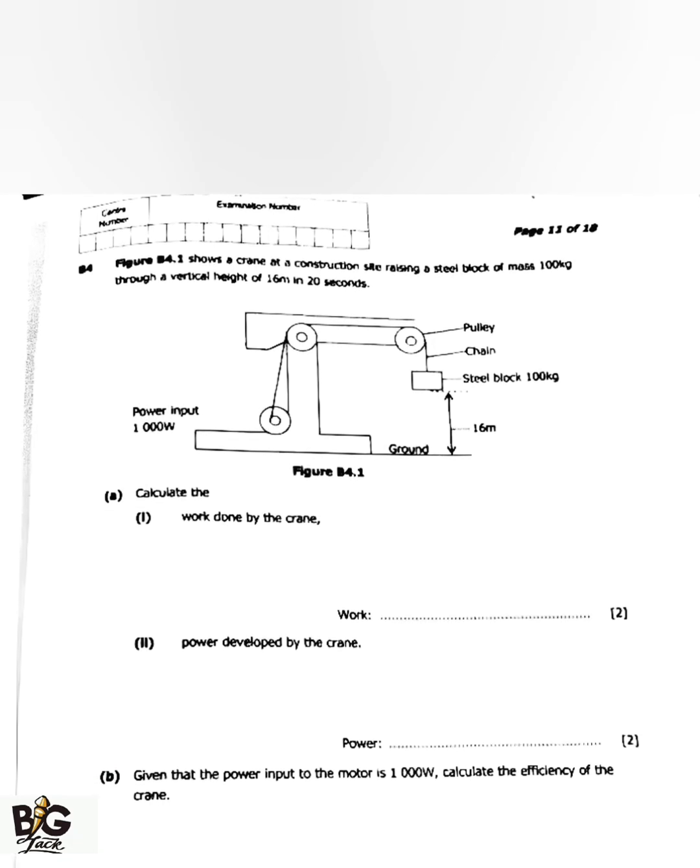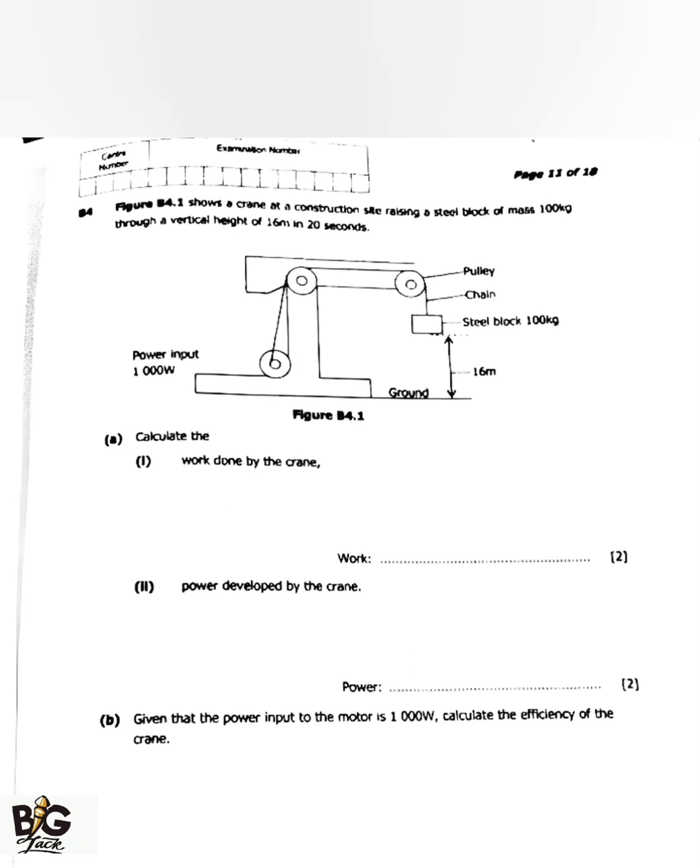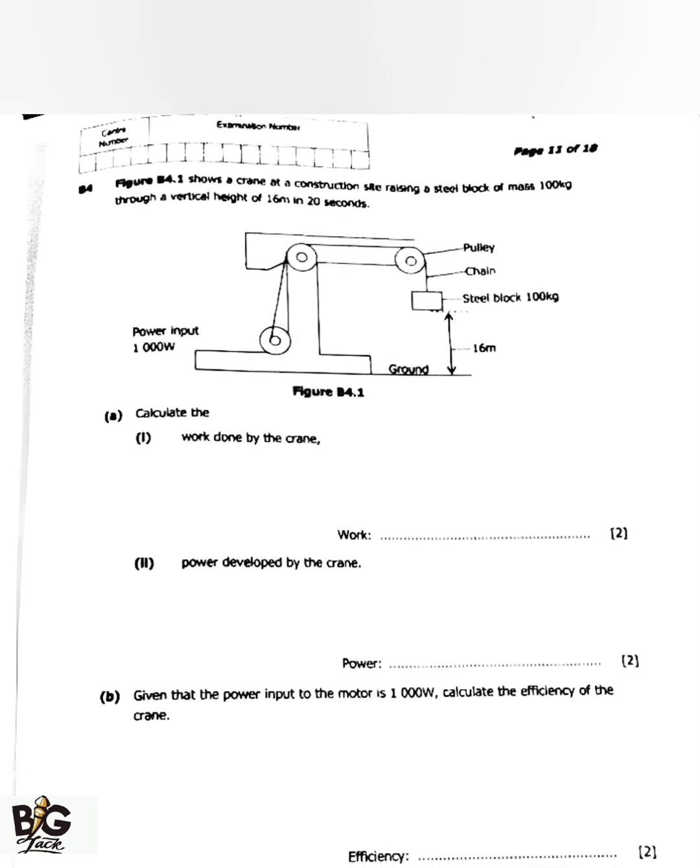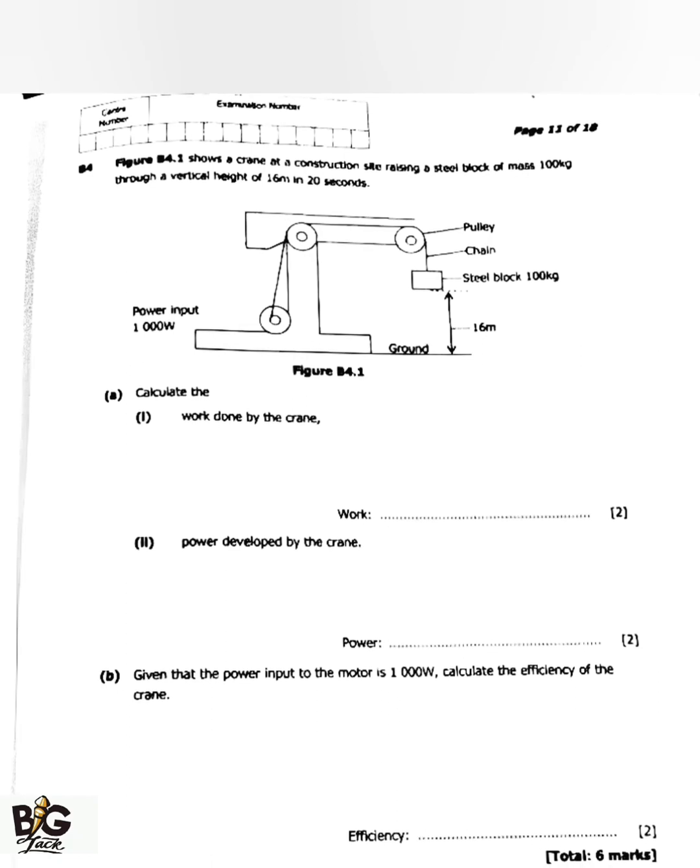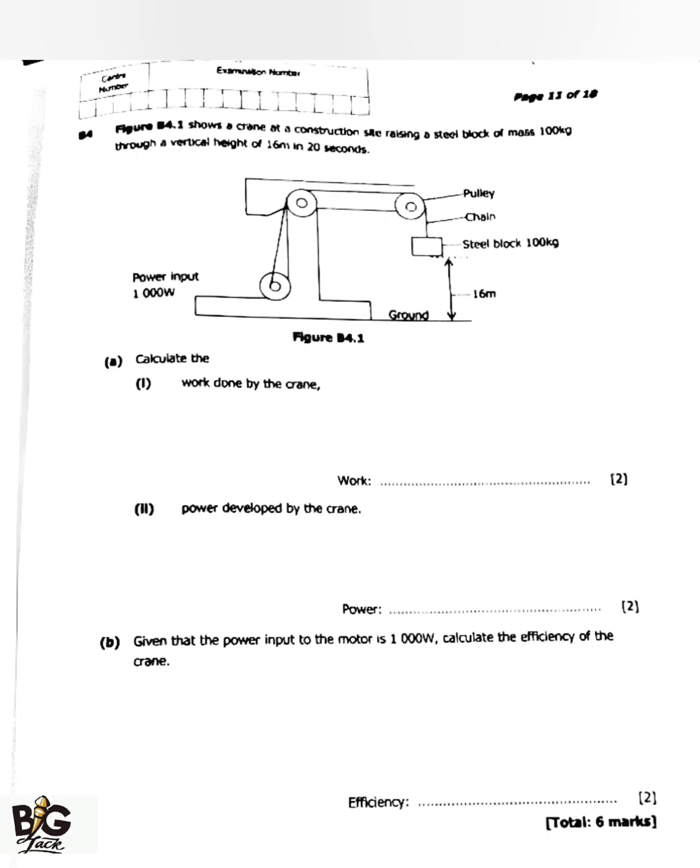The question reads: Figure B4.1 shows a crane at a construction site raising a steel block of mass 100 kg through a vertical height of 16 meters in 20 seconds. We have the power input which is 1000 watts.